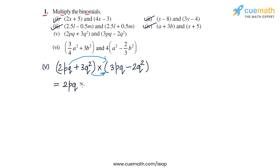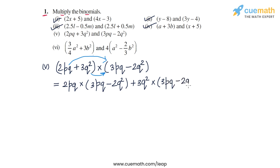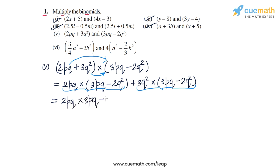We get 2Pq into 3Pq minus 2Q squared, and then 3Q squared into 3Pq minus 2Q squared. Expanding both products using the distributive law gives: 2Pq into 3Pq, minus 2Pq into 2Q squared, plus 3Q squared into 3Pq, and minus 3Q squared into 2Q squared.